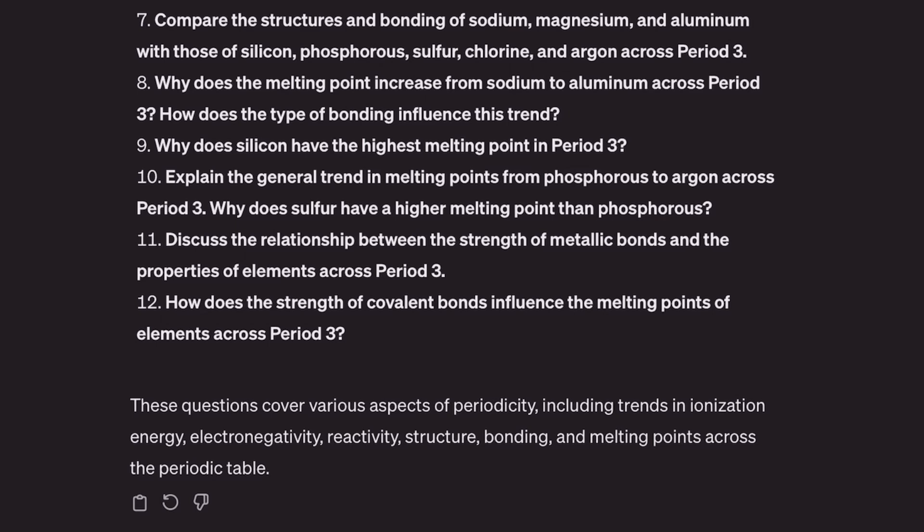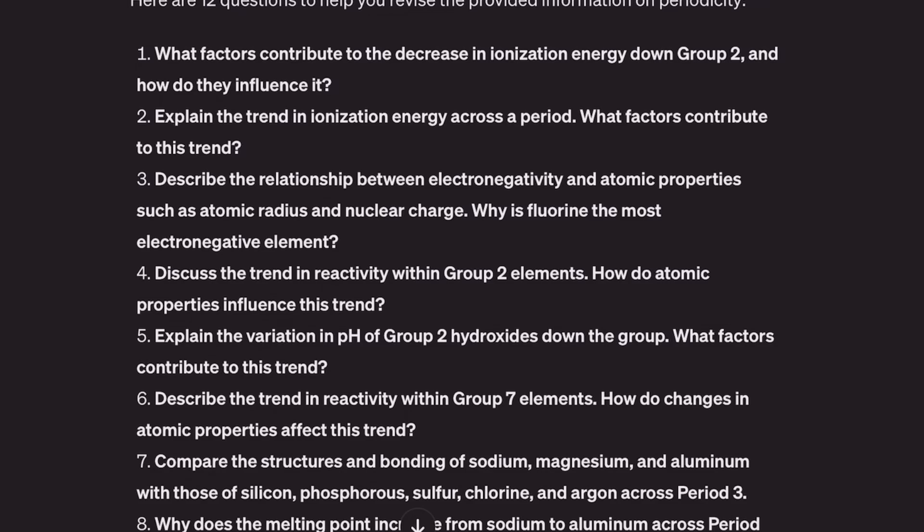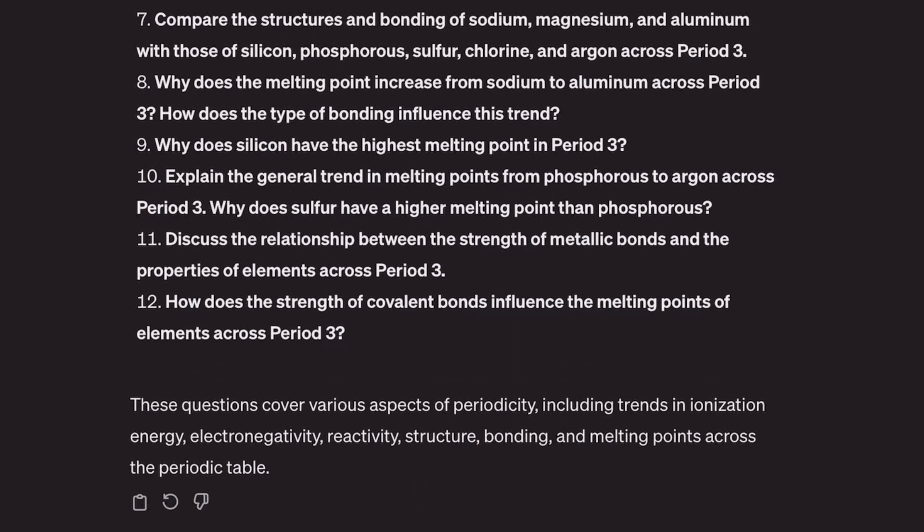The only thing I'm a little wobbly on is question 12, the final one: 'How does the strength of covalent bonds influence the melting points of the elements across period 3?' Well, it really doesn't, because across period 3 the only element that has covalent bonds broken is silicon — but the rest of it is a solid effort.